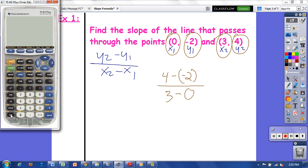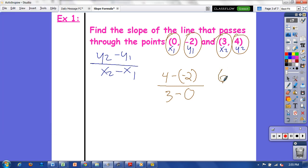Then you solve. 4 minus negative 2 will give you positive 6, and 3 minus 0 is 3. So you get 6 over 3, simplify that which would be 2 over 1 or just 2. So the slope of this line would be 2 over 1 or just 2.